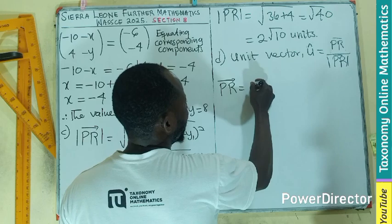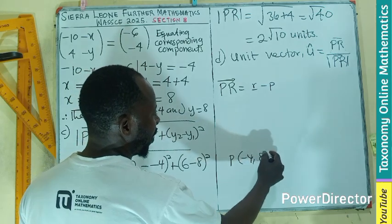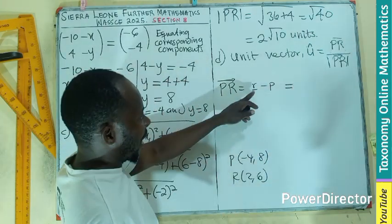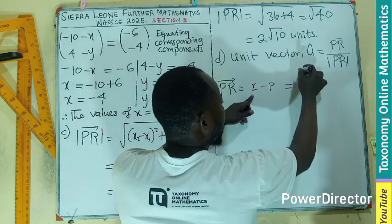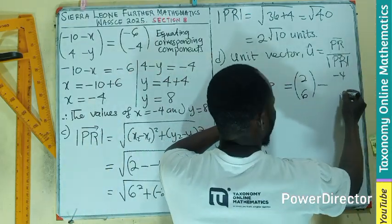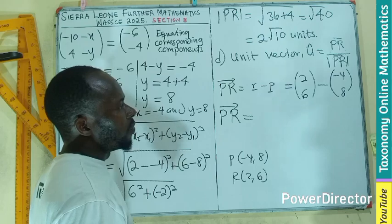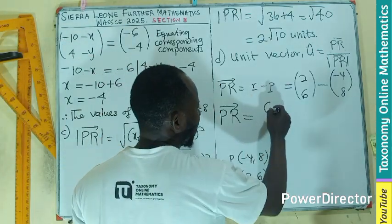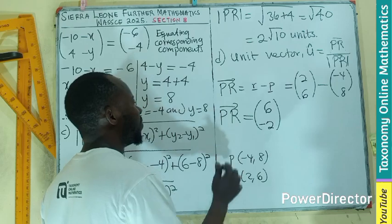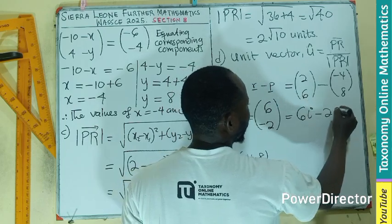Vector PR will be R minus P. We have R as (2, 6) and position vector P as (-4, 8). So vector PR equals (2 - (-4), 6 - 8) = (6, -2). We can write it in the IJ plane as 6I - 2J.